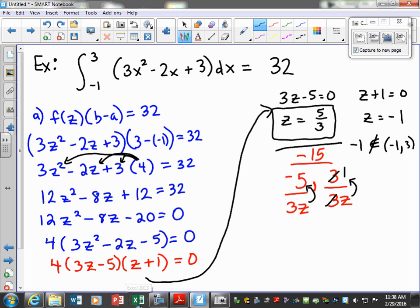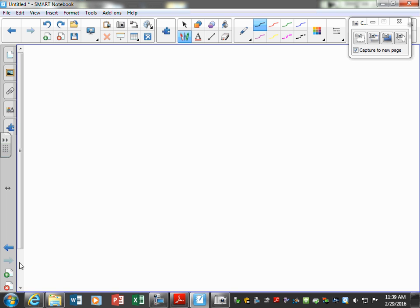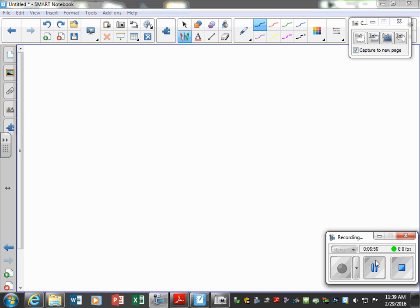And this is my scratch work on the side for factoring, in case you wanted to see that. That's using the bottoms up method. You can factor however you want to. And then when you set each of these terms equal to zero you get z is equal to 5/3 and z is equal to negative 1. Now the only reason this negative 1 is not included is because this is the open set from negative 1 to 3 and it's not a bracket there, so it's not included in the set. It's not in our interval.